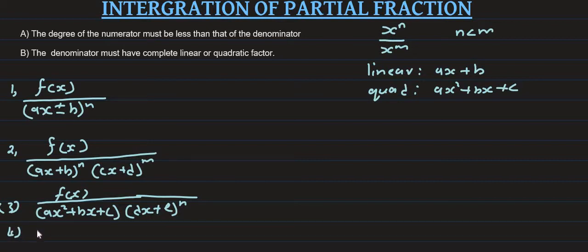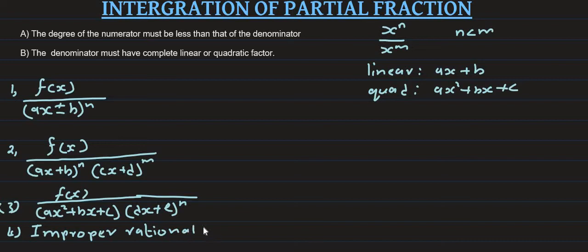The fourth case is an improper rational fraction, where n, the degree of the numerator, is greater than or equal to the degree of the denominator.